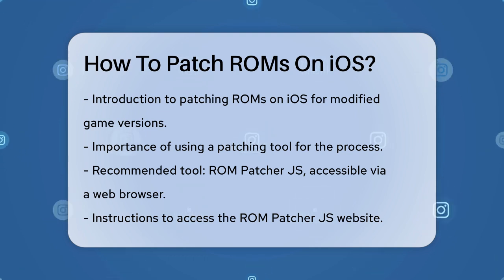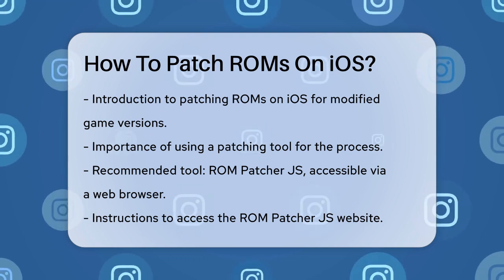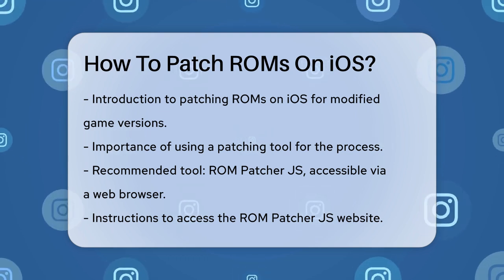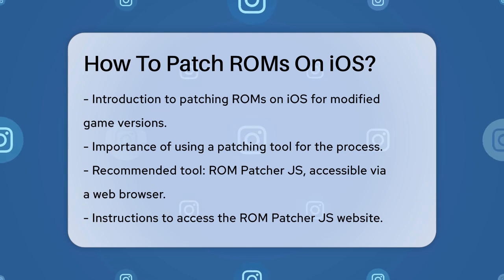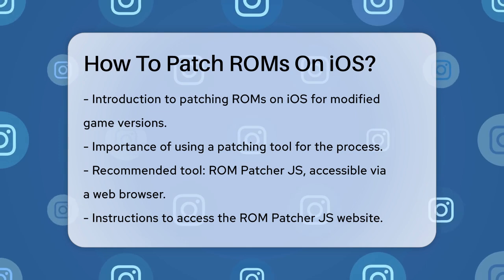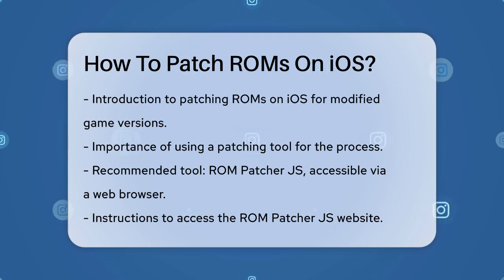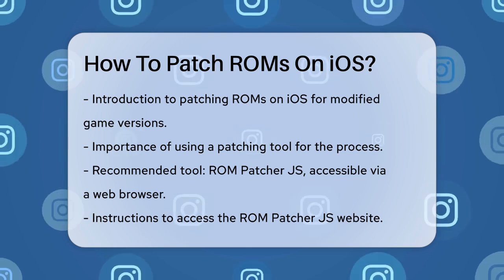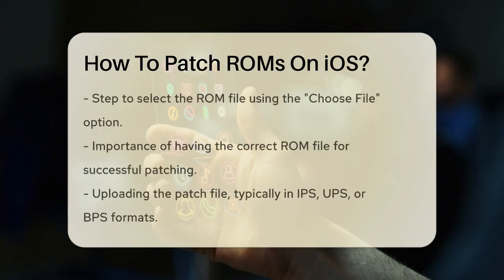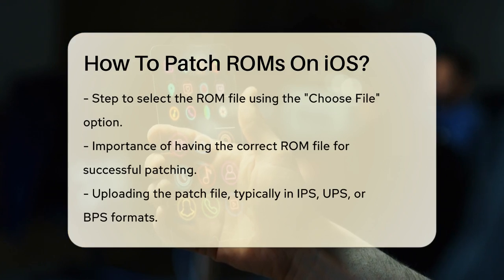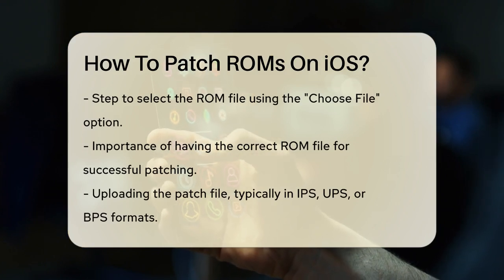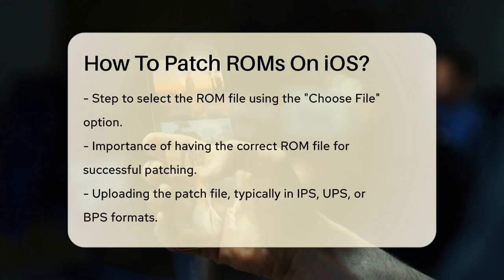To start, head over to the ROM Patcher JS website. Once you're on the site, you'll need to select your ROM file. Click on the Choose File option and browse to where your ROM is stored. Make sure you have the correct ROM file, as the patching process won't work if the files don't match.